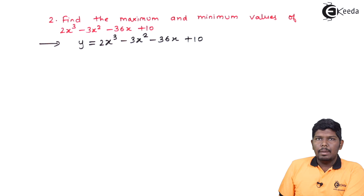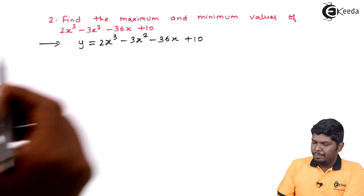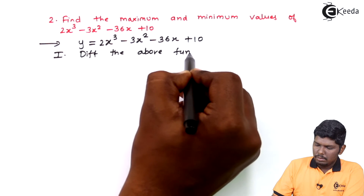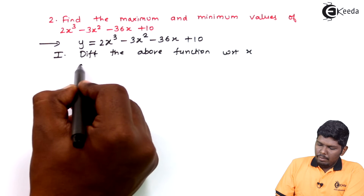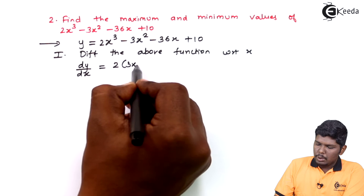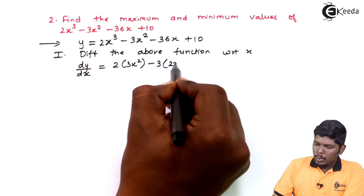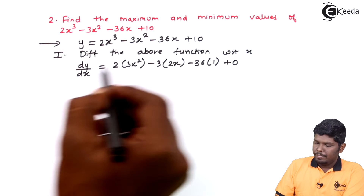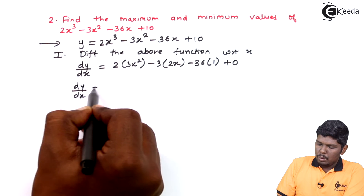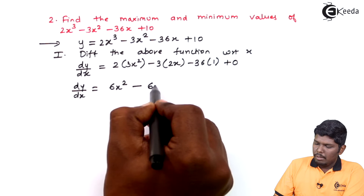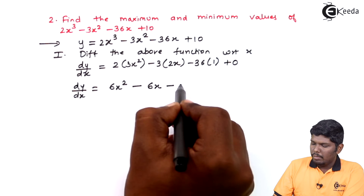To find the maximum and minimum values, we need to follow some particular steps. Step number 1: differentiate the function with respect to x. The derivative dy/dx gives us: derivative of x³ is 3x², minus 3 times derivative of x² is 2x, minus 36. That gives dy/dx = 6x² - 6x - 36.